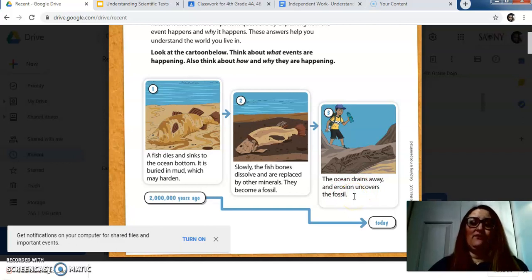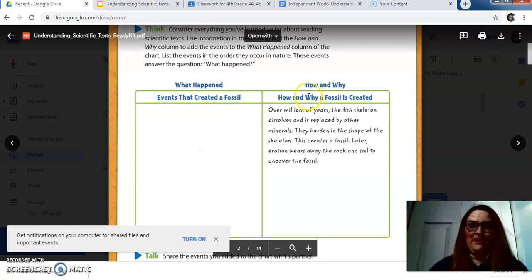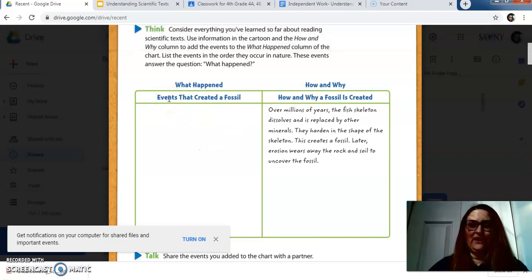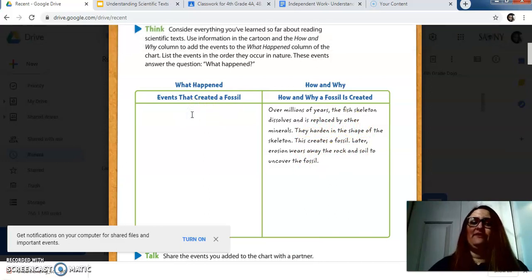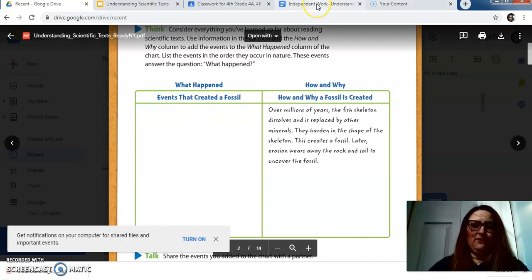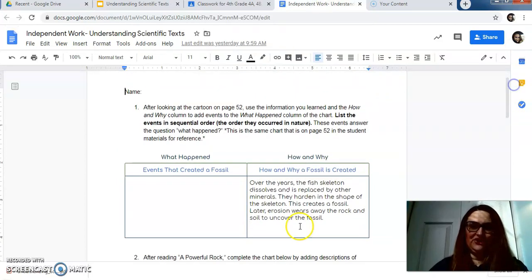So again, you're going to stop and ask yourself, what happened? Why did it happen? And for what reason and how and what way did it happen? So after you've done that, you are going to complete your what happened and how and why about the events that created a fossil. And this is already filled out for you, the how and the why of why a fossil is created. But you're going to fill out the events using what you read in the cartoon about what are the actual events that created fossils. It could be pretty easy. And remember, that is replicated, looks just like this in your Google Doc.